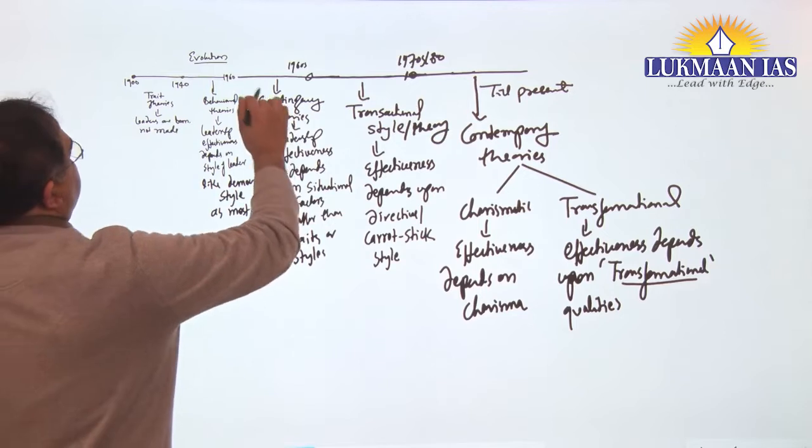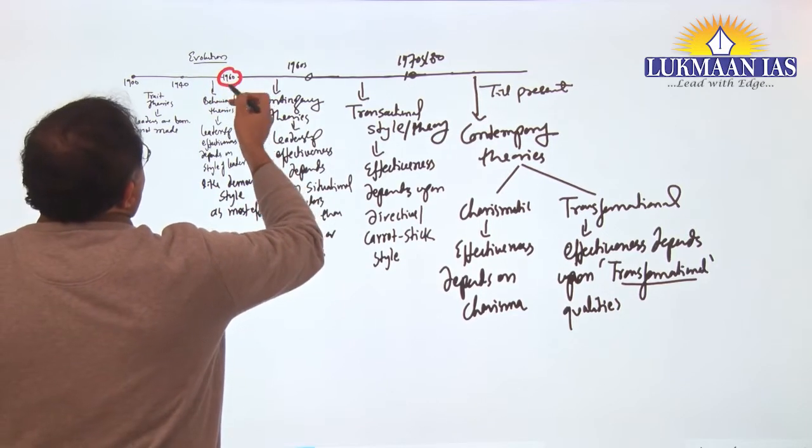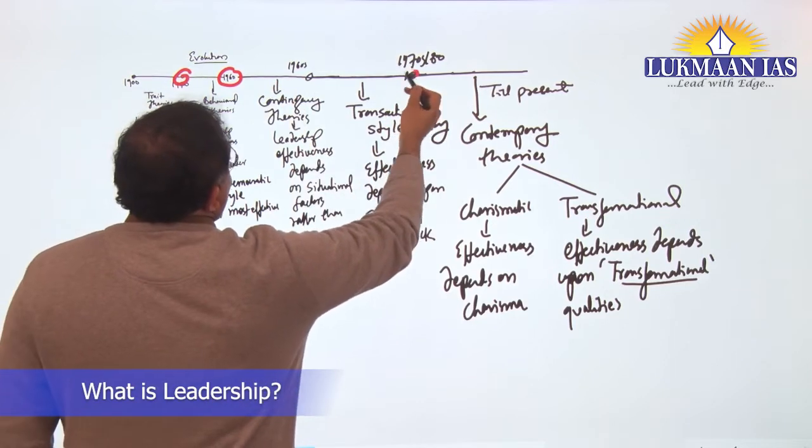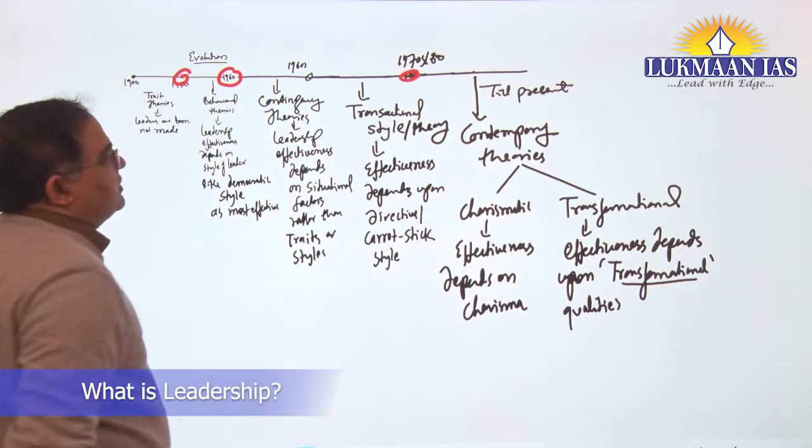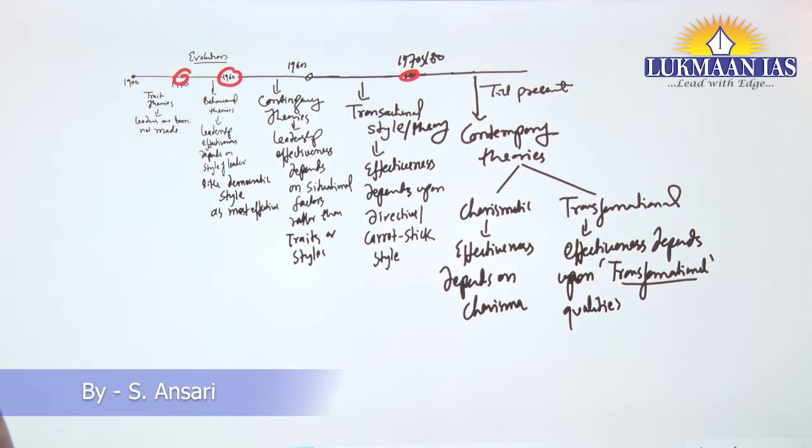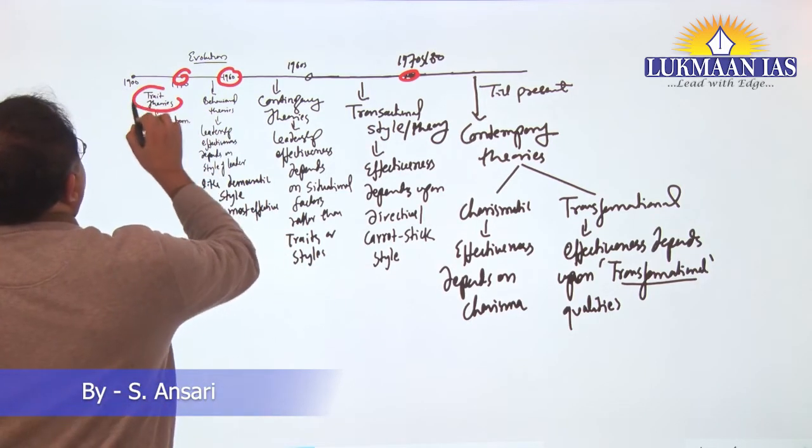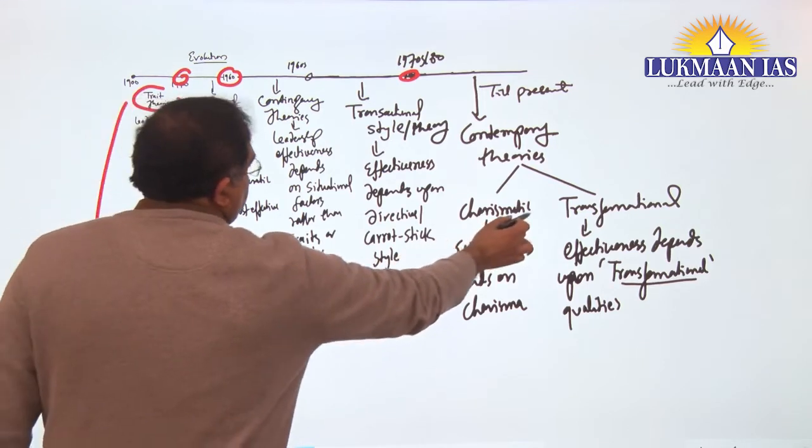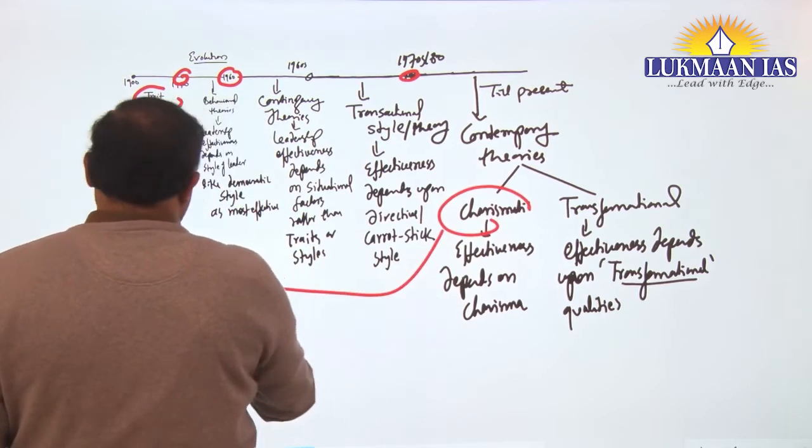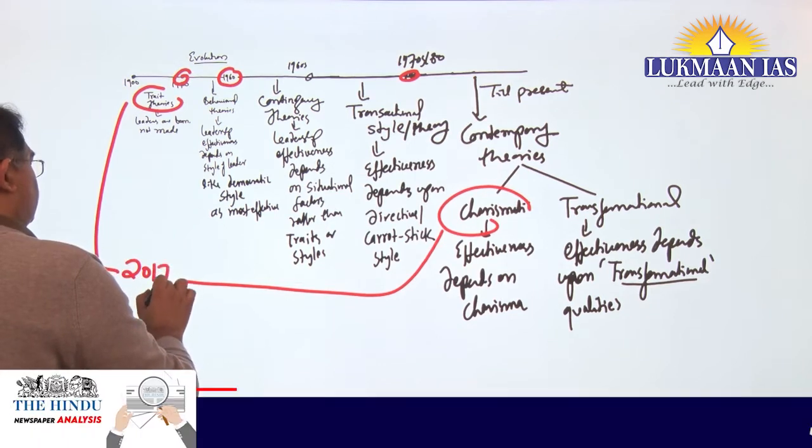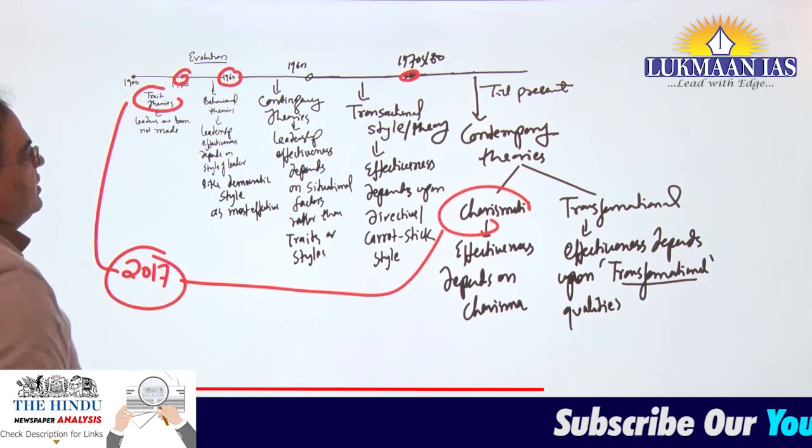It's difficult to separate by years because till Rensis Likert's behavioral theory, this is in the 60s, but thereafter it's 60s, 70s. The question was asked, linking this and this, I guess in 2017 or 18.